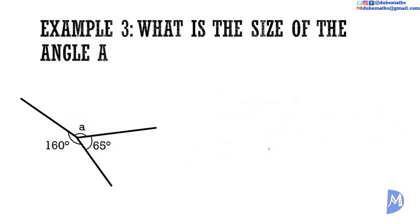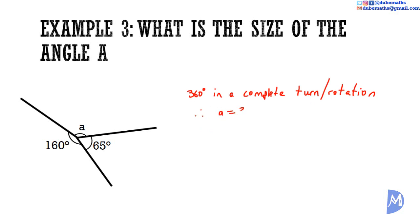Example 3: what is the size of angle A? We know there are 360 degrees in a complete turn or rotation. Therefore, angle A equals 360 degrees minus 160 degrees minus 65 degrees. Angle A is equal to 135 degrees.